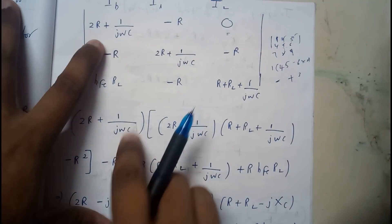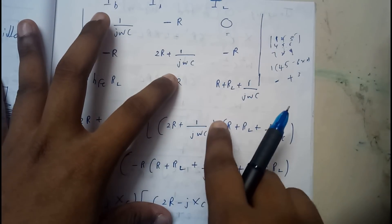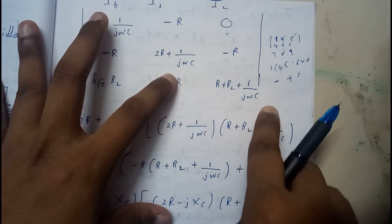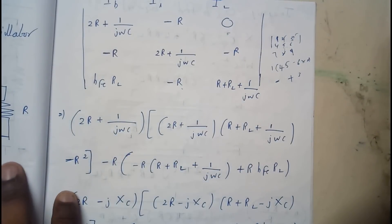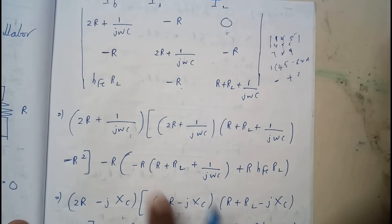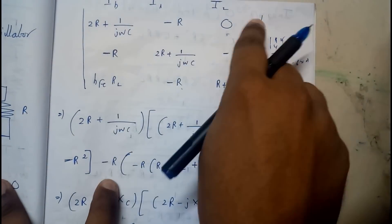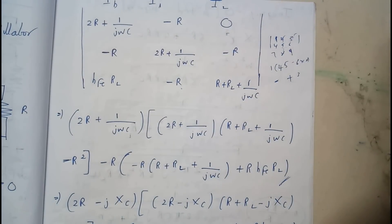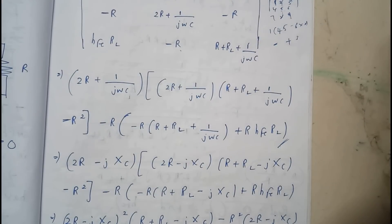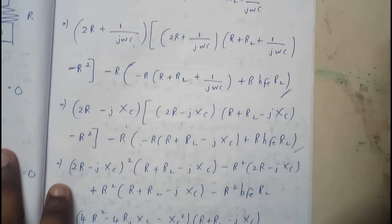After expanding the determinant, we get: (2R + 1/jwC) · (2R + 1/jwC) · (R + RL + 1/jwC), minus (−R)(−R), giving +R². This minus R² term arises from cross-multiplication of the off-diagonal entries. Solving this requires very careful step-by-step working — it is a genuinely complex analysis.